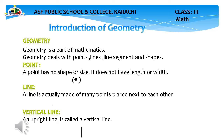Line: a line is actually made of many points placed next to each other. One point, the other point, the other point — if you match points to points, one section is called a line segment, and the whole thing is called a line. Vertical line: a vertical line is called an upright line. Here you can see a line which looks like a straight upright line — it is called a vertical line.